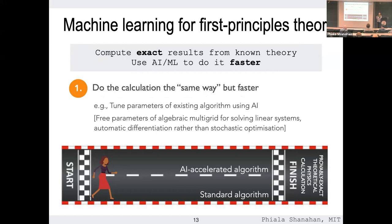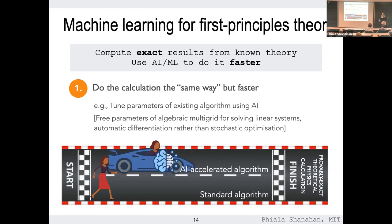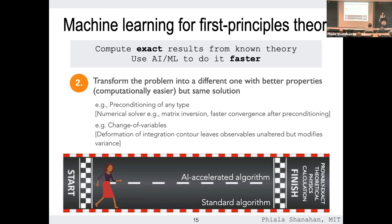There are several ways to think about this. The simplest is to do the calculation exactly the same way but faster — perhaps using machine learning to tune parameters of an existing algorithm. Bayesian optimization approaches fall under the ML toolkit and are very valuable here. For example, if you're inverting very large matrices using algebraic multigrid algorithms, there are many free parameters and machine learning can help tune them. On our track, we're always going from the same start to the same end, doing an integral that always has the same answer — but maybe you get there faster with AI.